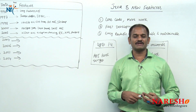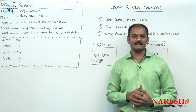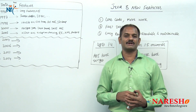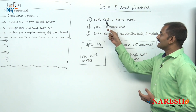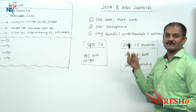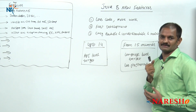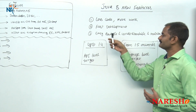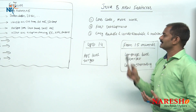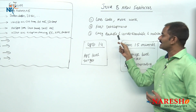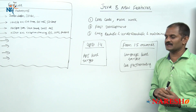I want to give the conclusion. What is the main objective behind the design? New features are added to the Java language — very simple, three points. Number one: the target is less code written that performs more work. That less code should execute fast, giving us fast development. The second target: fast development with code that is easily readable, understandable, and maintainable. That is the target of Sun Microsystems for the Java language.